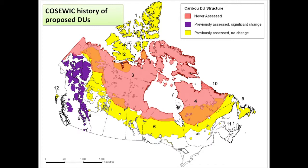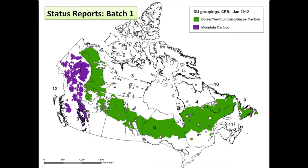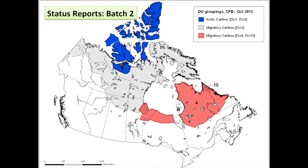Just to let you know, in terms of the proposed DU status, different colors show which ones have been assessed previously and where the DU structure has not changed — that's all the yellow. The purple mountain units have been changed enormously, and Deb will talk about that in the next talk. This large area has never been assessed; we are going through that process right now. We have the first batch of two status reports in January and are about to put out the bid for the second batch next month.